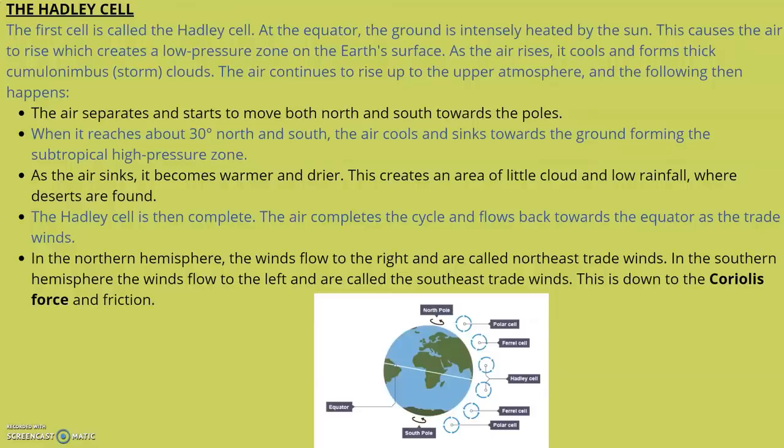As the air sinks, it becomes warmer and drier. This creates an area of little cloud and low rainfall where deserts are found. The Hadley cell is then complete. The air completes the cycle and flows back towards the equator as the trade winds.